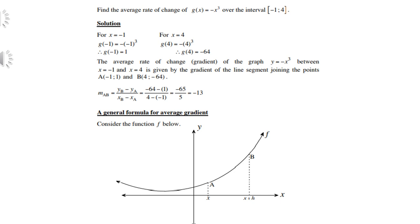The average rate of change, or gradient of the graph, between -1 and 4 is given by the points A(-1, 1) and B(4, -64). Use your gradient formula, be careful with the negatives, and you get -13.